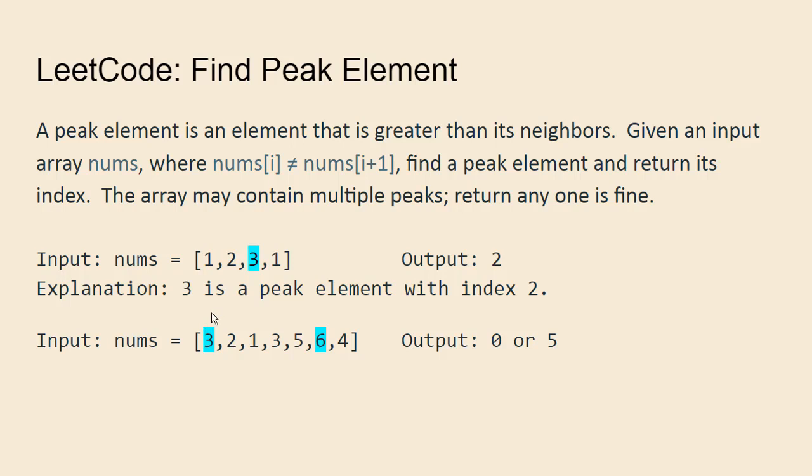Three is also a peak element because it has just one neighbor, the number two to its right. Because it's greater than that one, it is also a peak element. So you can output either zero or five.